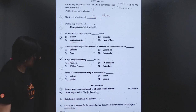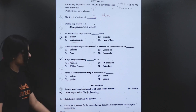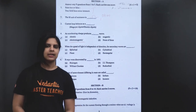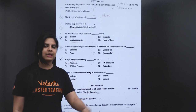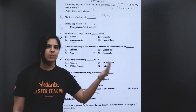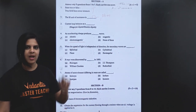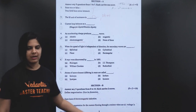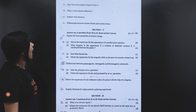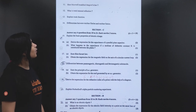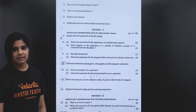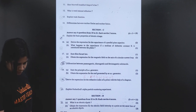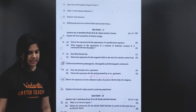Obtain the expression for current flowing through a resistor when an AC voltage is applied to it. We apply V = V₀ sin ωt. Then I = V/R, substituting: I = V₀ sin ωt divided by R = V₀/R. So I = I₀ sin ωt.